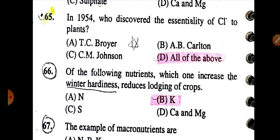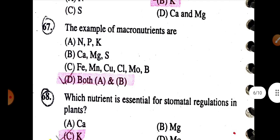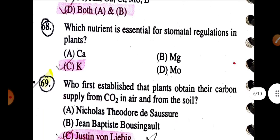Of the following nutrients, which one increases winter hardiness and reduces lodging of crops is potassium. Examples of macronutrients are both A and B: NPK and CNGS. Which nutrient is essential for stomatal regulation in plant is potassium.